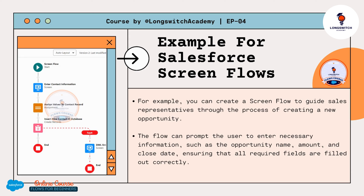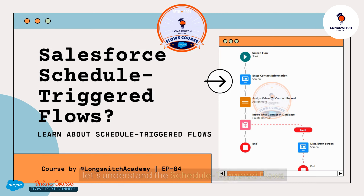The flow can prompt the user to enter necessary information, such as the opportunity name, amount, and close date, ensuring that all required fields are filled out correctly. Let's understand the Schedule Triggered Flows.